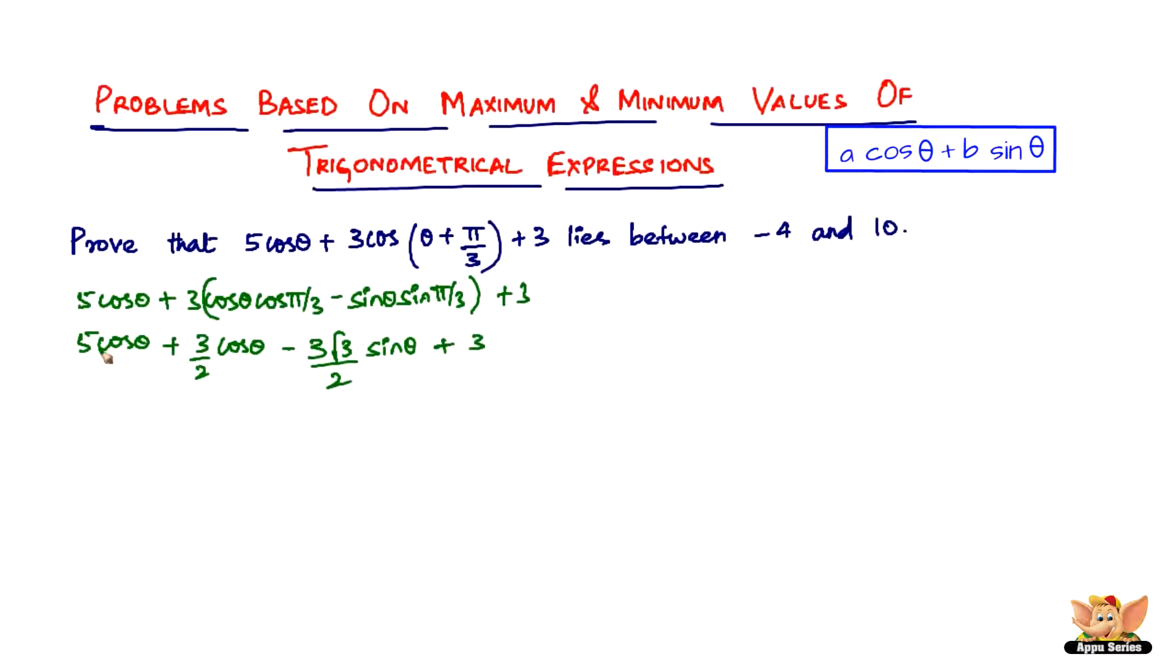So it's going to be 3√3/2 times sin θ plus 3. And now solving this, just take the LCM of 5 plus 3/2. So we get 13/2, so 13/2 cos θ minus 3√3/2 sin θ plus 3.